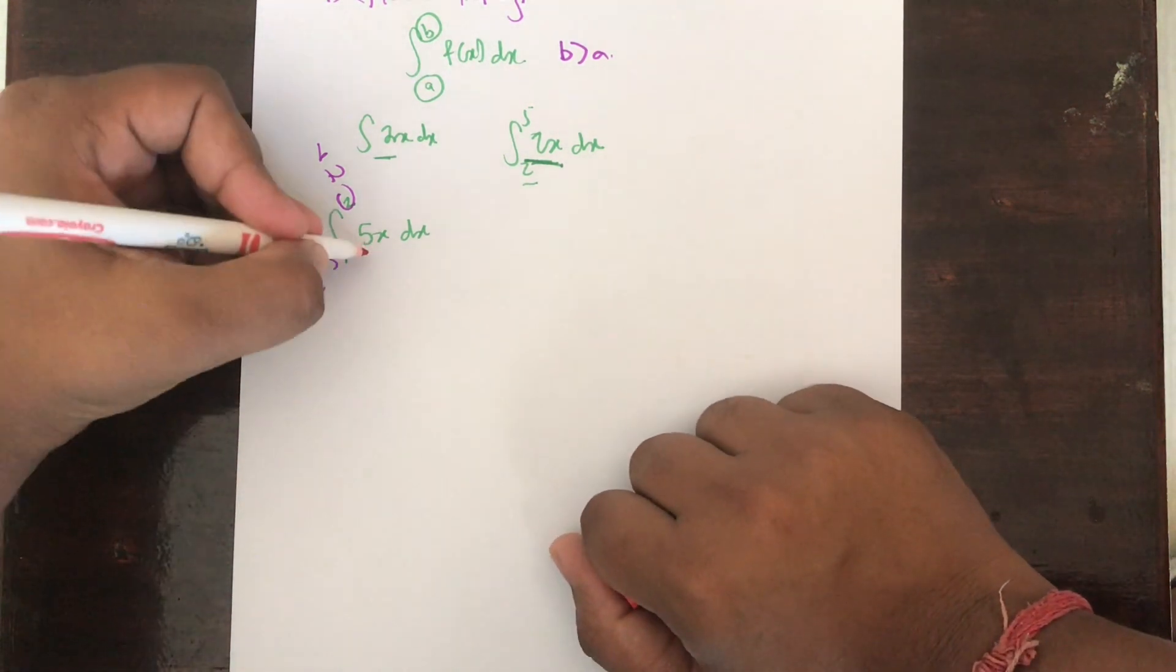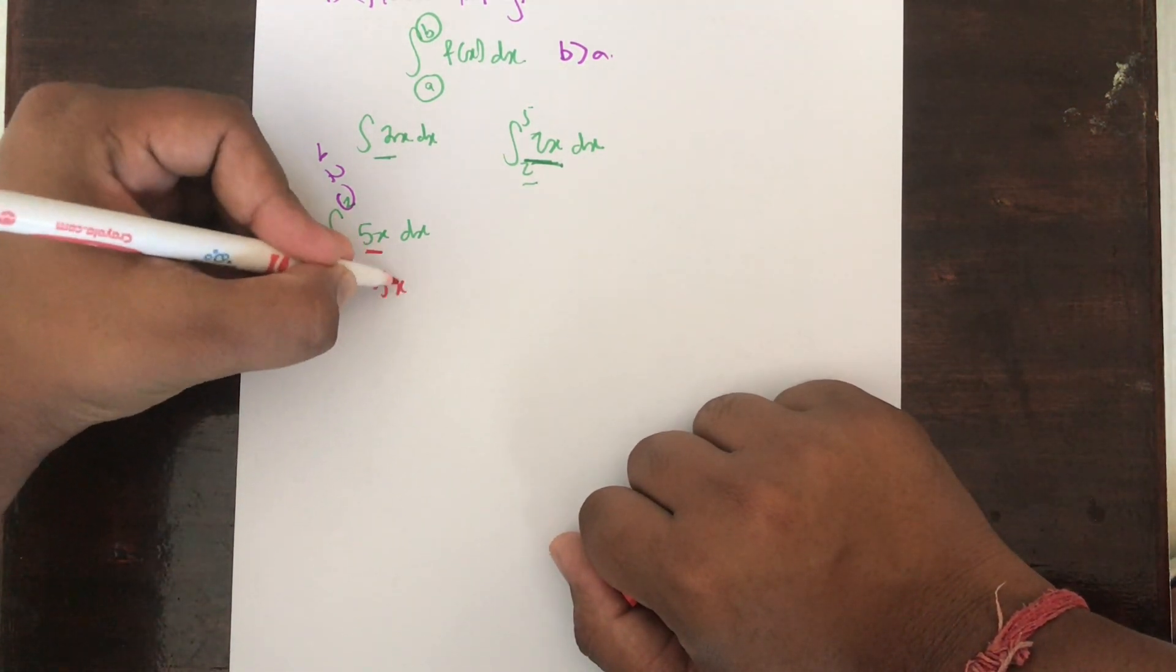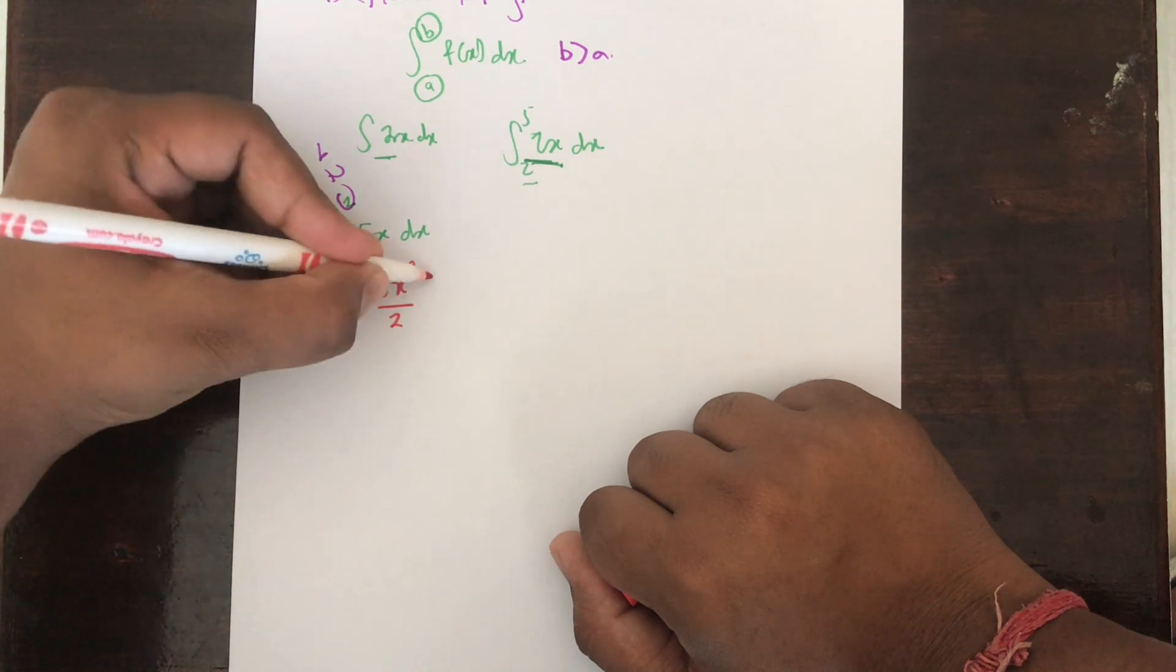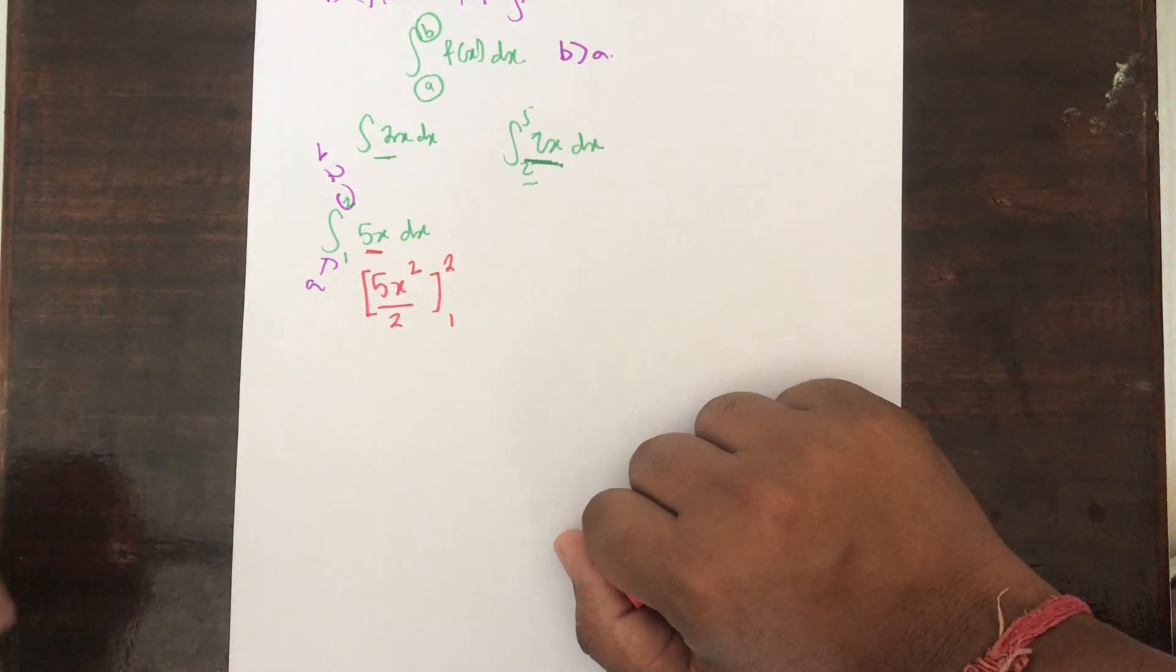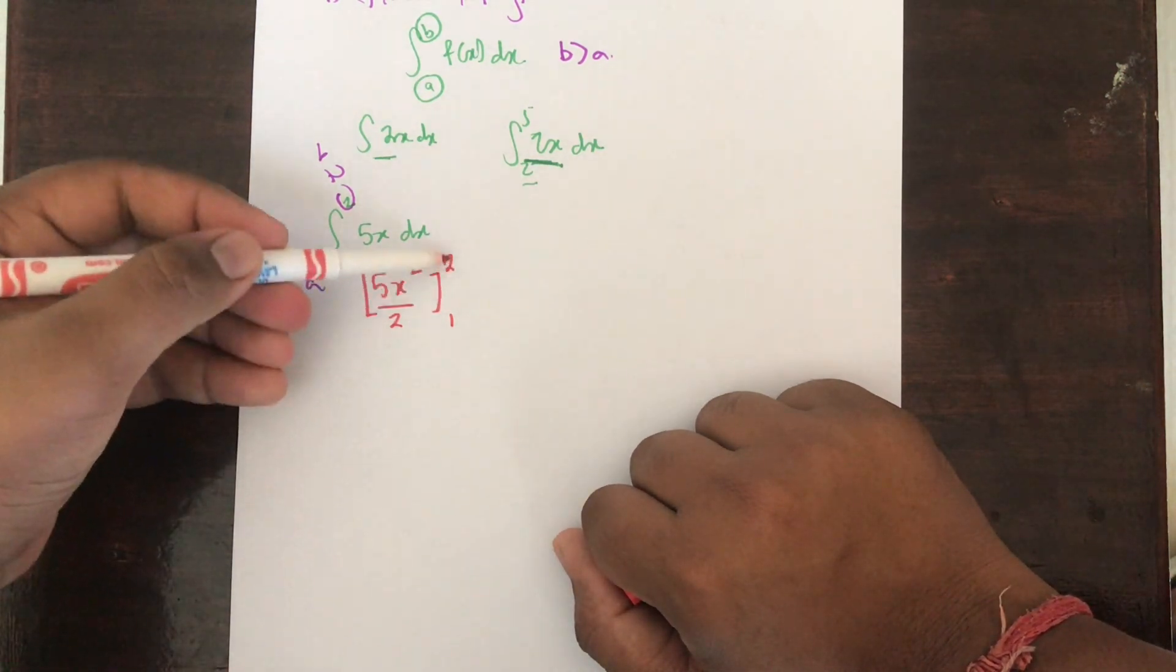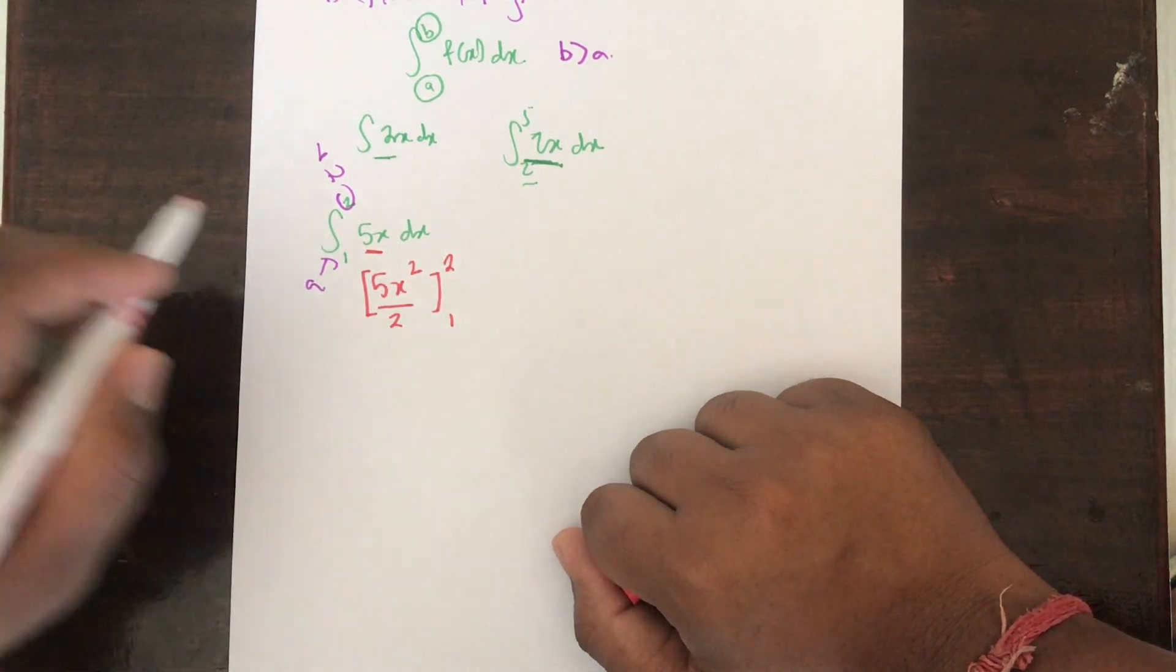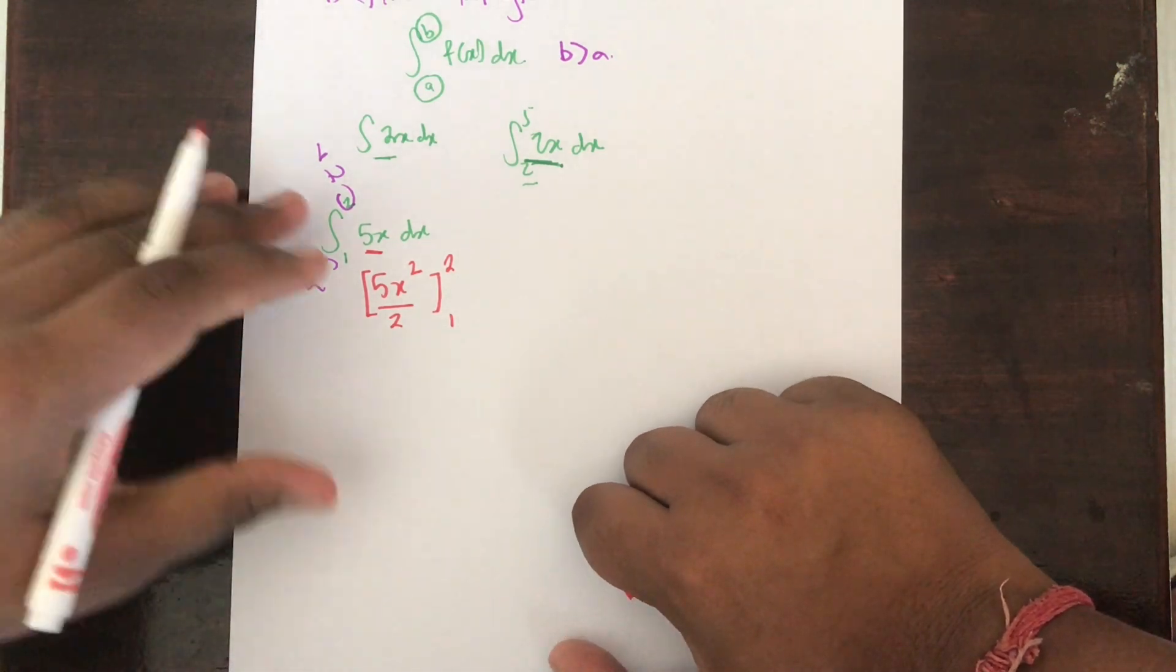To solve this, just do it the normal way on how you learned it. You have 5x, so you do 5x squared divide by 2, and then you put the brackets showing the limits 2 and 1. It doesn't really matter where you put the limit.